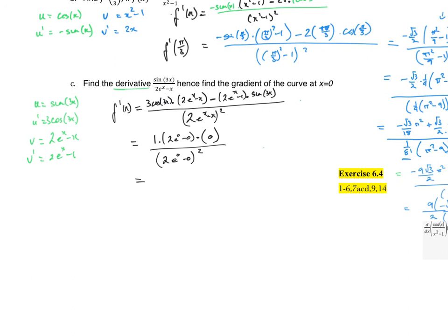So what's that give me? 2e^0 is 2, so I get 2 on the top over 2² on the bottom, which is a half. So there's the gradient of the curve. Therefore, probably should say gradient is equal to a half at x equal to 0.